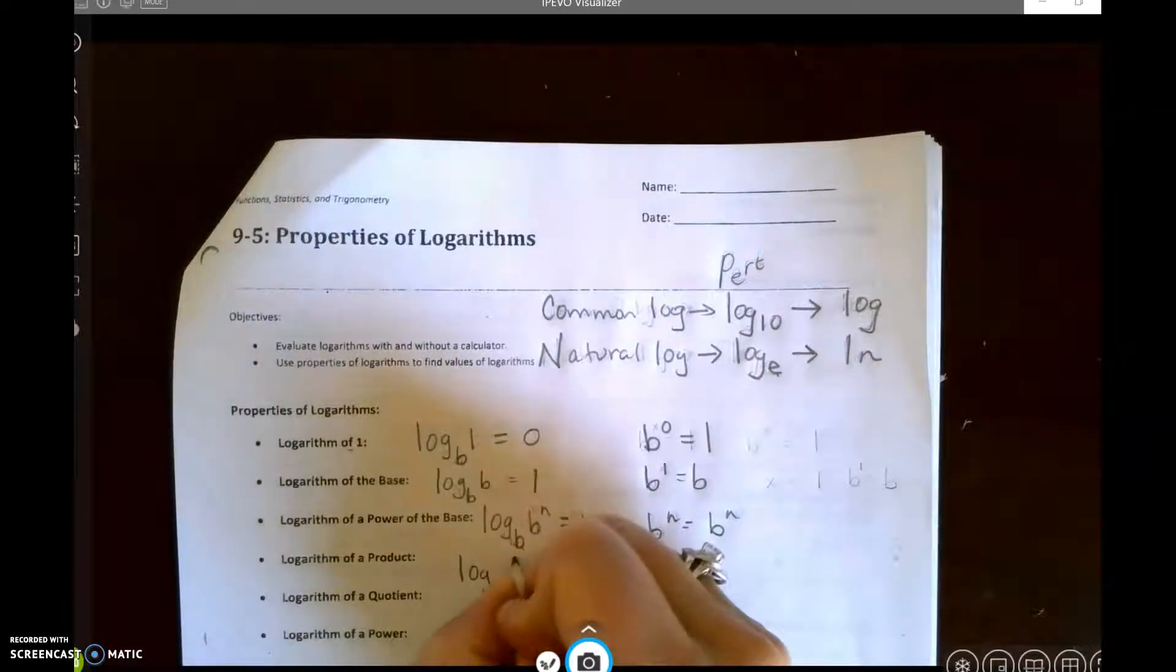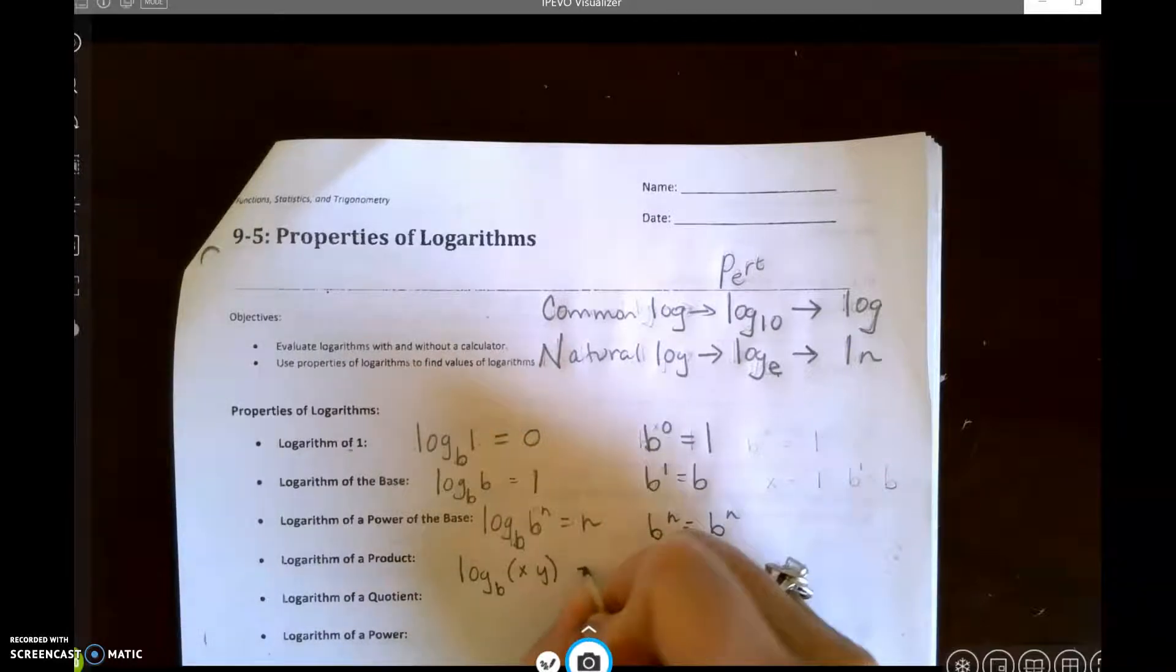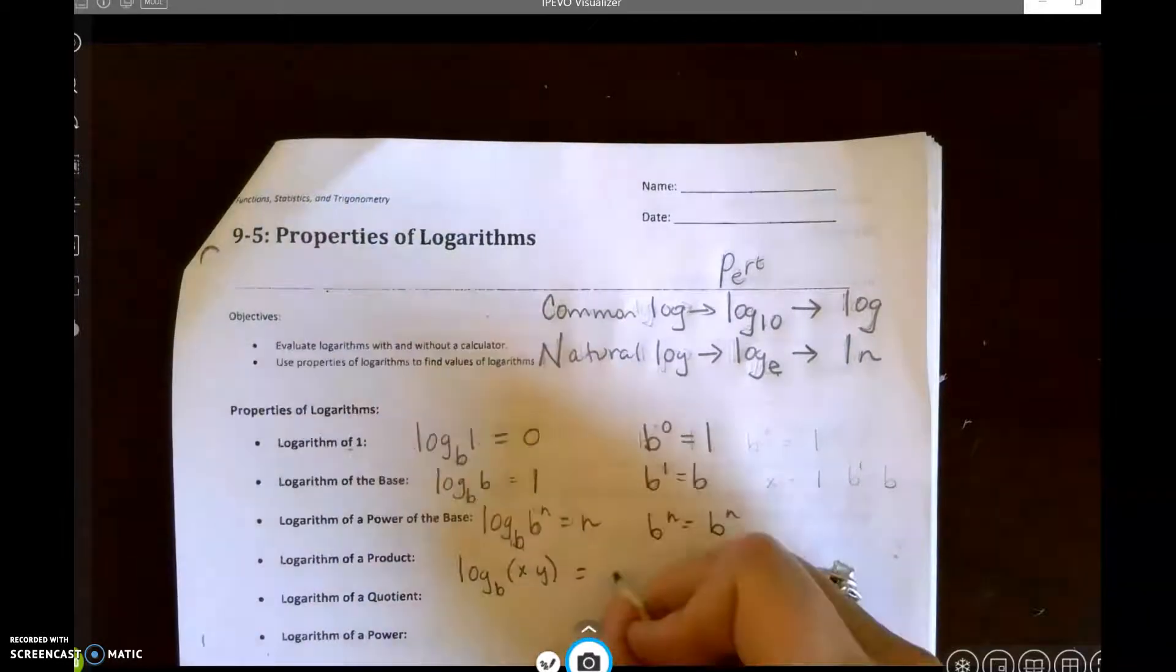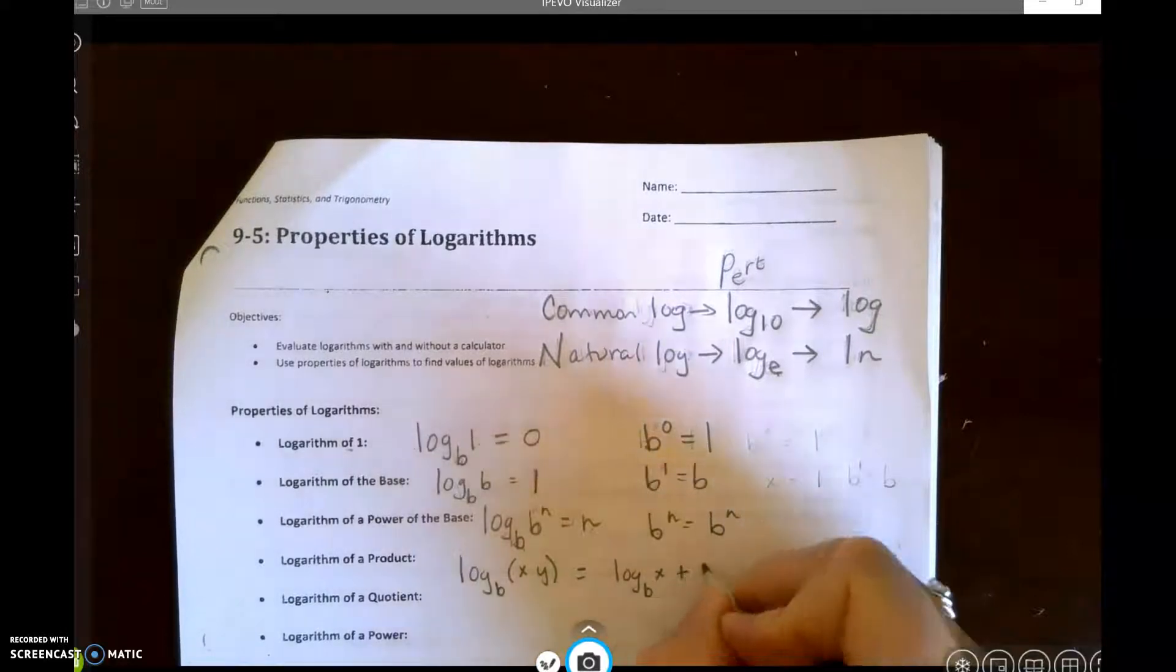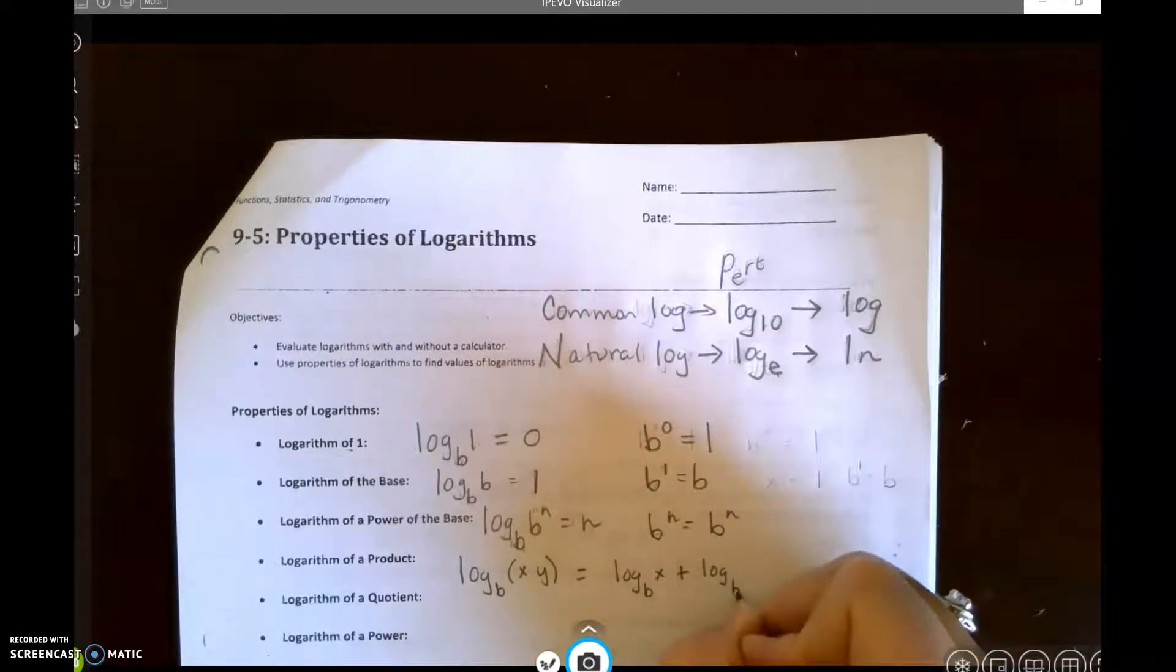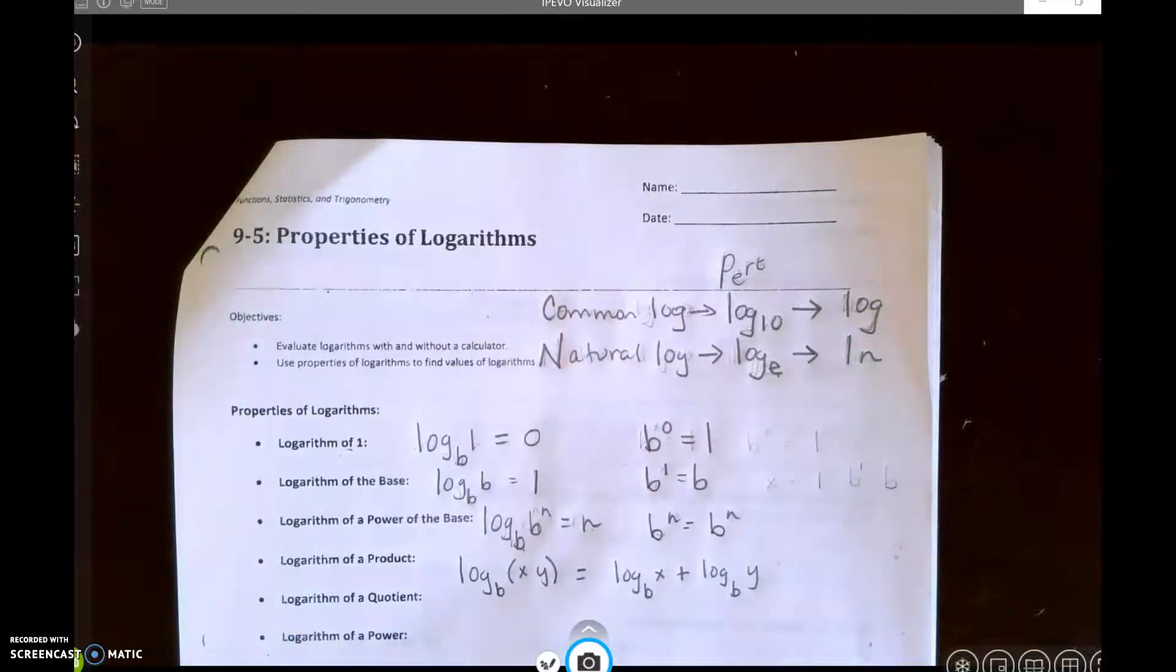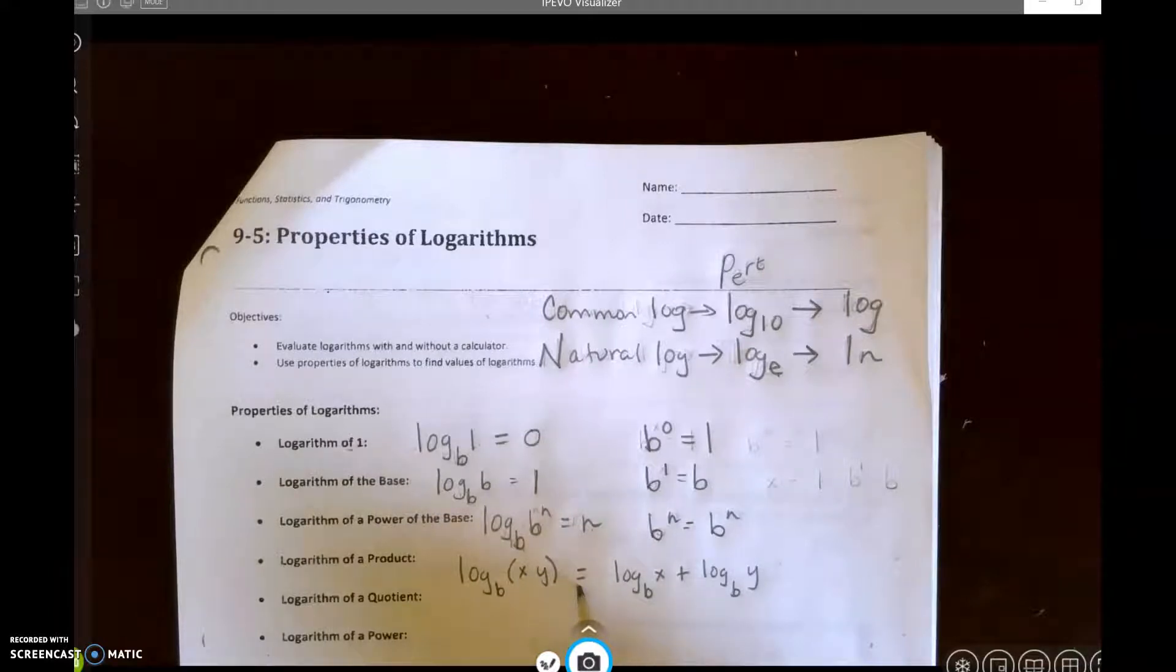Log base b of x times y equals log base b of x plus log base b of y. Because remember, these answers that we get are exponents, and when you multiply with the same base, you add the exponents.